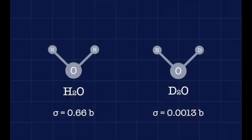To give you an example, regular light water — the water that we deal with every day — has a neutron cross-section of about 0.66 barns. It's a very efficient neutron absorber. Heavy water, on the other hand, which is water where one or both of the hydrogens has been replaced with deuterium, a heavy isotope of hydrogen with one extra neutron, has a neutron cross-section of 0.0013 barns — 500 times smaller. Yet the two molecules are about the same size.